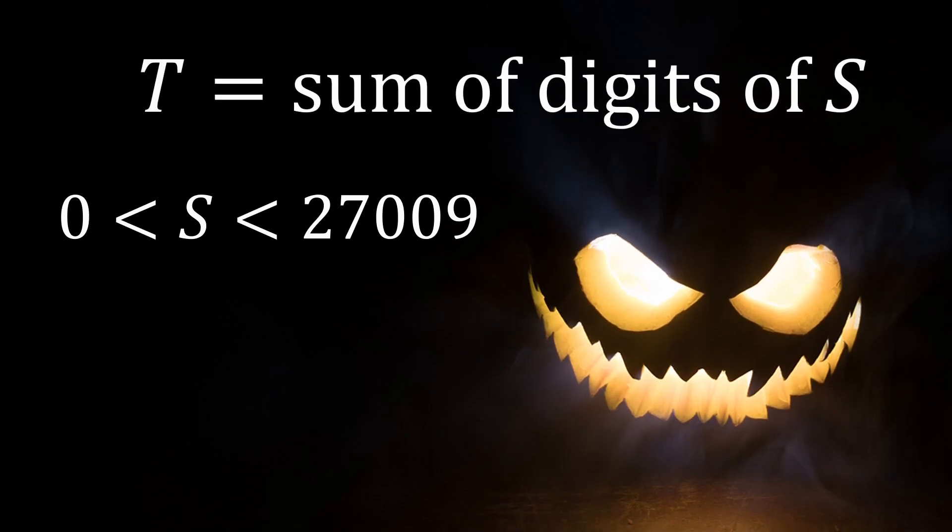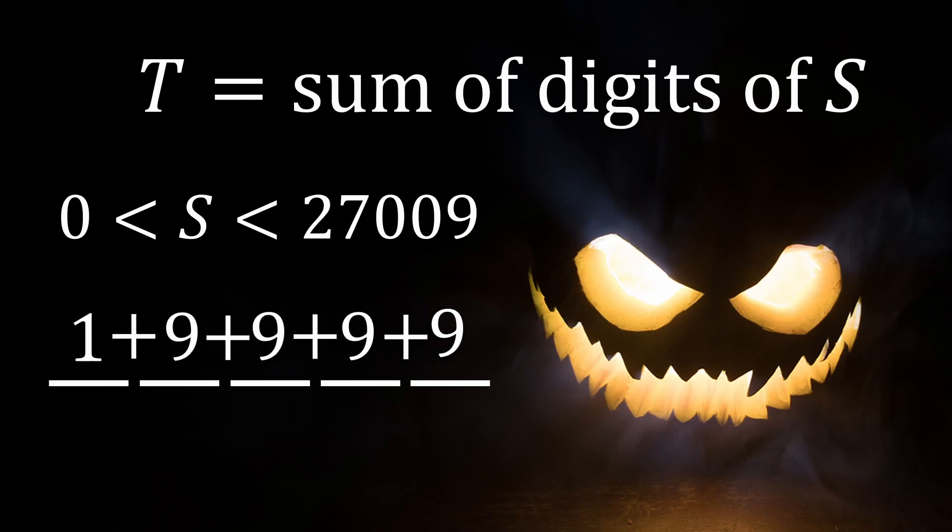Next we will find the upper bound for the sum of digits of S which is T. The maximum sum would come from a 5 digit number beginning with a 1 followed by 4 nines resulting in a sum of 37.